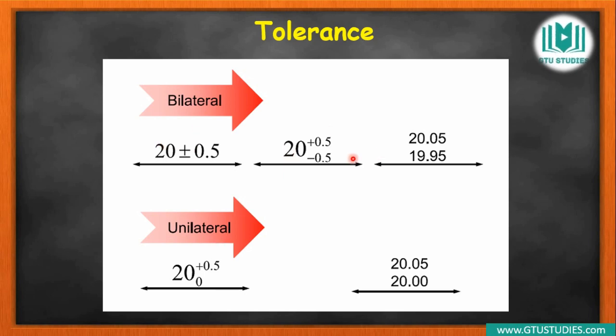This can be written in short form. So to identify: if you can see limits on both sides of the basic size, then it is bilateral tolerances. If the tolerance is only on one side, then it is unilateral tolerances.